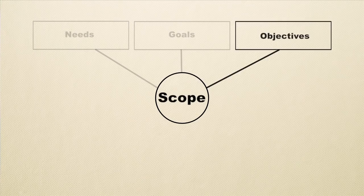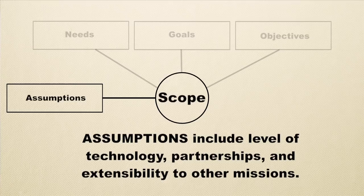There are a number of other things you want to do in this scoping process, early in the development process. One is to define assumptions, which include levels of technology, partnerships, and extensibility to other missions. You're trying to define some terms everyone is going to use. For example, I assume that if I look at Mars, there would be water somewhere, and I could find it if I have the right technology. Or if I look at enough stars, I'm bound to find a planet sooner or later — that's an assumption. Science is about making assumptions that if you build the right instrumentation, you can figure out these big problems. You don't always know you're going to succeed, but you have assumptions that if you have a certain sensitivity of instrument, you will be able to accomplish the needs, goals, and objectives.